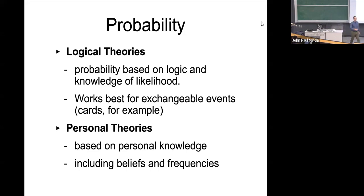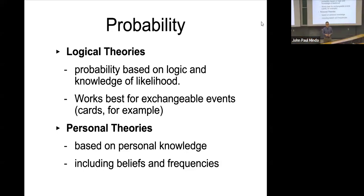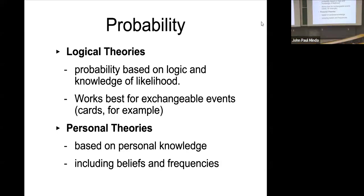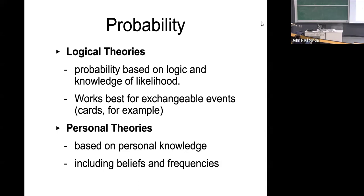Second are logical theories, which align with classical probability theory. These rely on accurate information rather than observed frequency. Exchangeable events are a good example — for instance, rolling up the rim at Tim Hortons. It doesn't matter which location you buy from or who's buying; the probability stays the same. These are known probabilities, but humans rarely have access to this kind of precise information.